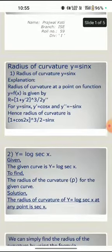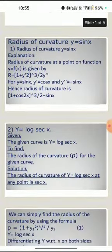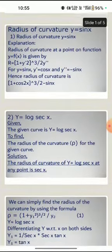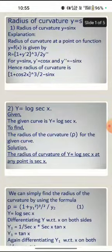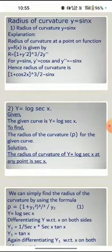For y = sin x, y' = cos x and y'' = -sin x. Hence the radius of curvature is (1 + cos²x)^(3/2) / |-sin x|.